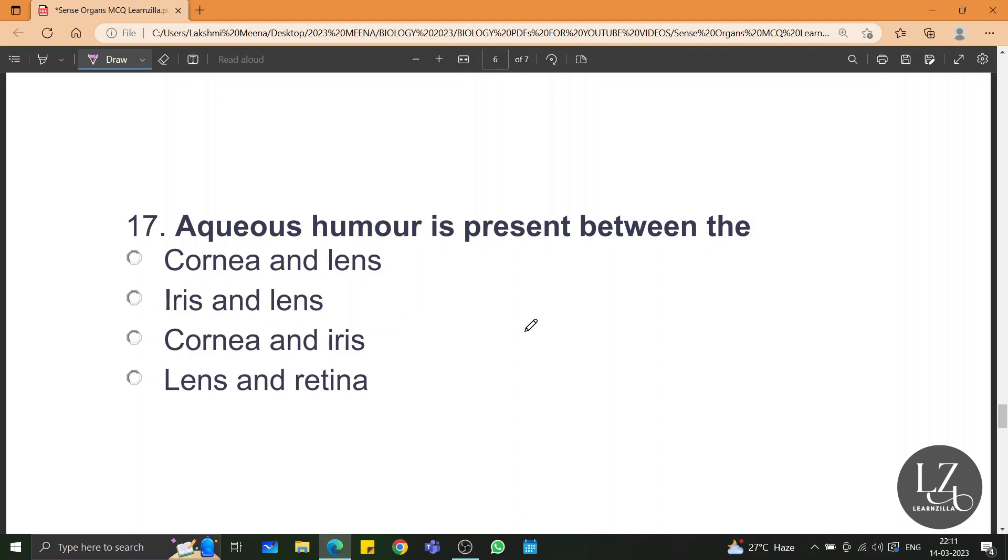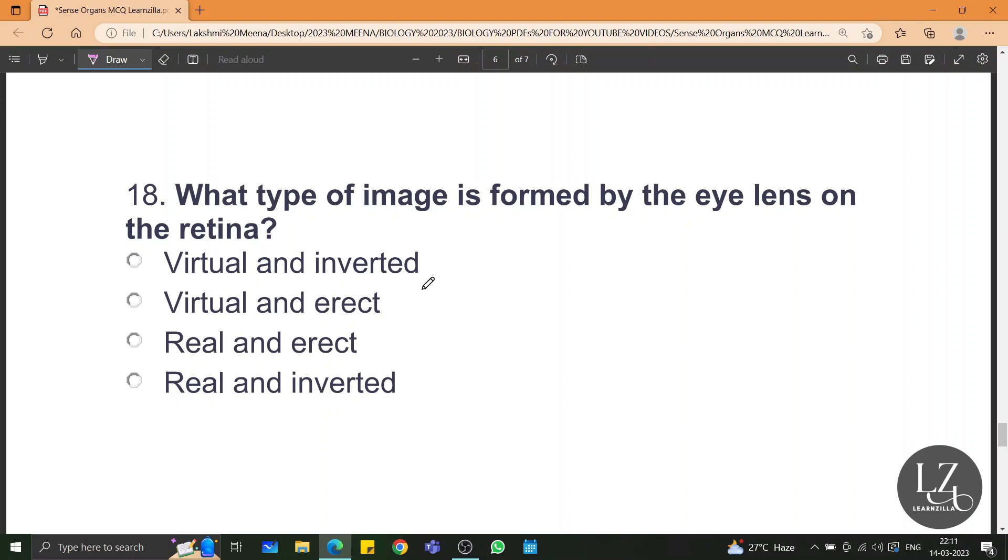Aqueous humor is present between the cornea and the lens. The aqueous chamber has the aqueous humor which is present between the cornea and the lens. What type of image is formed by the eye lens on the retina? It is a real and inverted image. It is only because of the optic nerves and transmission to the brain that we get the image we actually see. But in the retina it forms an inverted image.